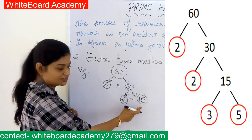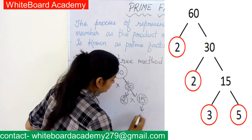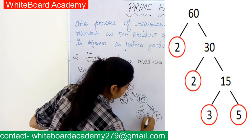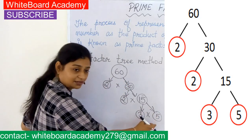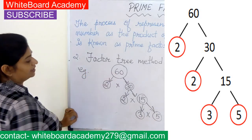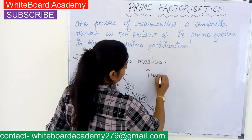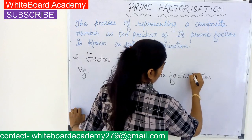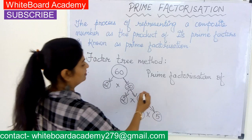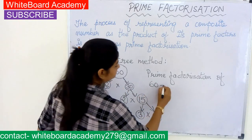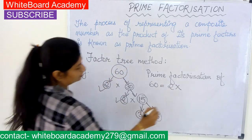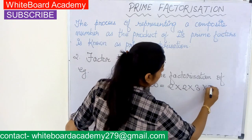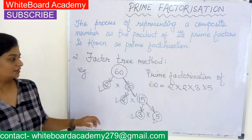2 into 15 makes 30, so again we get one prime factor while 15 is still composite. We then split 15 into 3 and 5 — both are prime factors. So the prime factorization of 60 can be written as 2 into 2 into 3 into 5.